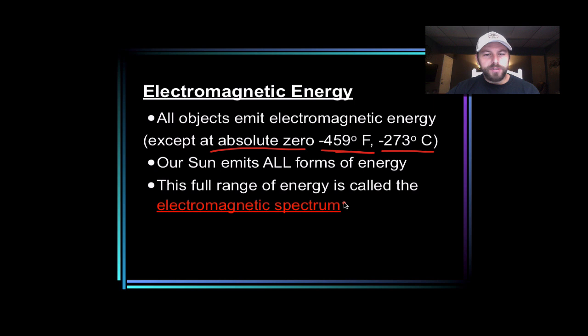Our sun emits all forms of electromagnetic energy geared towards really three specific that we'll go into, but it does release a little bit of some of the others. But as a whole, that full range of energy is the electromagnetic spectrum.